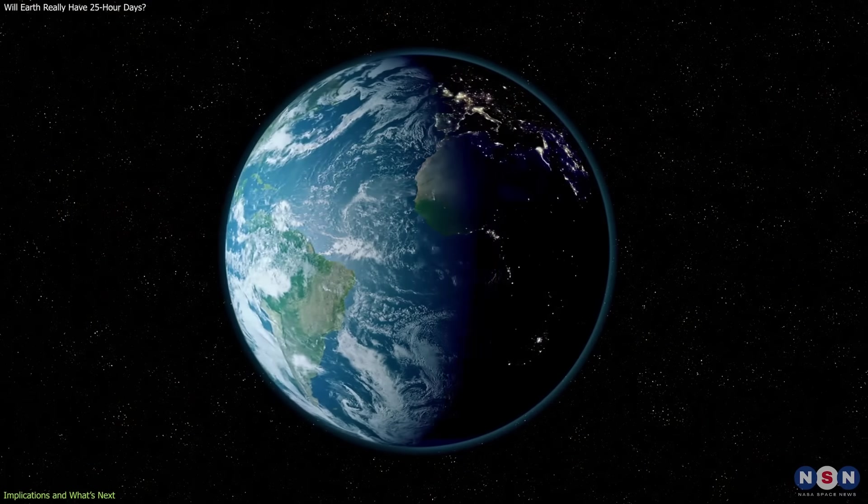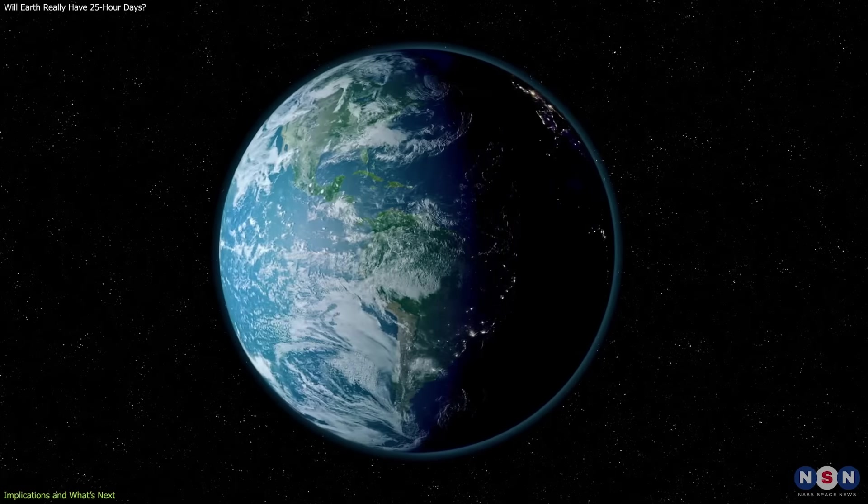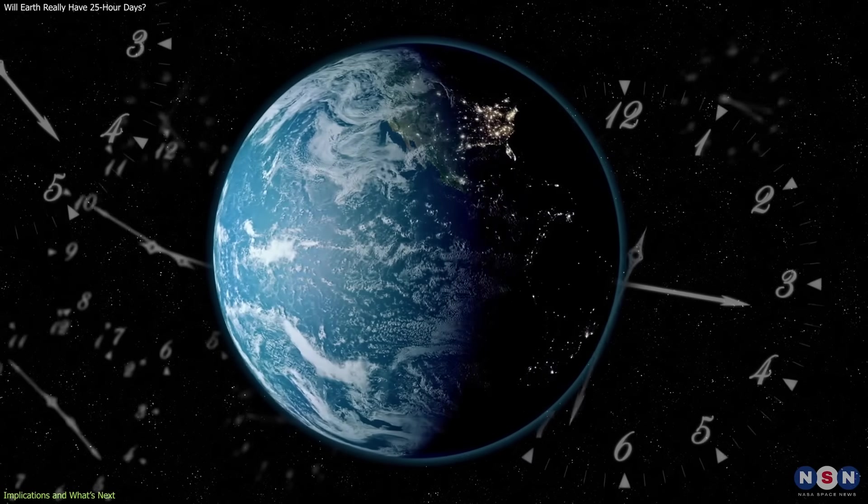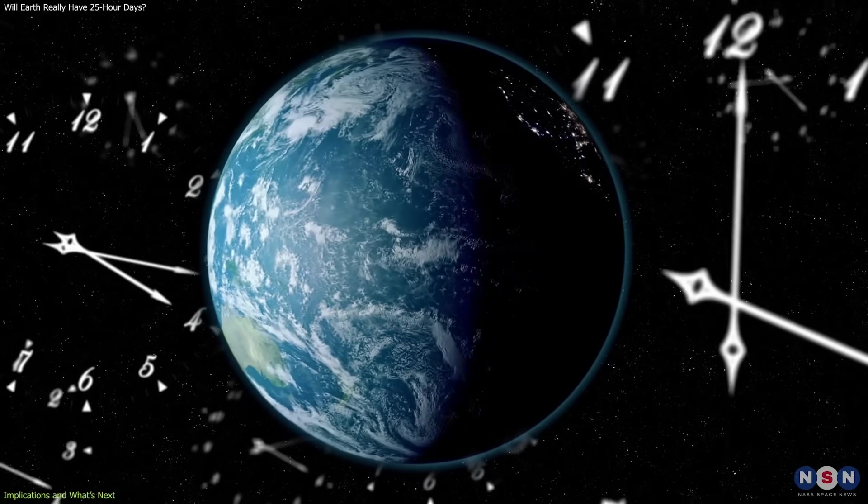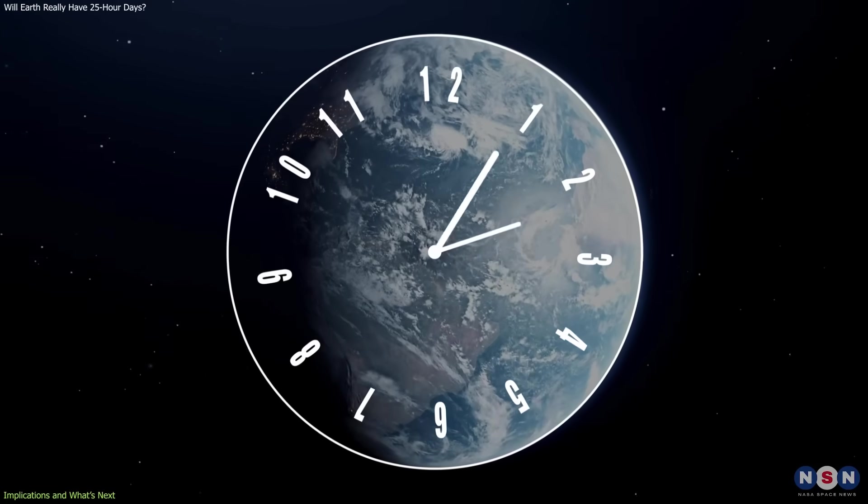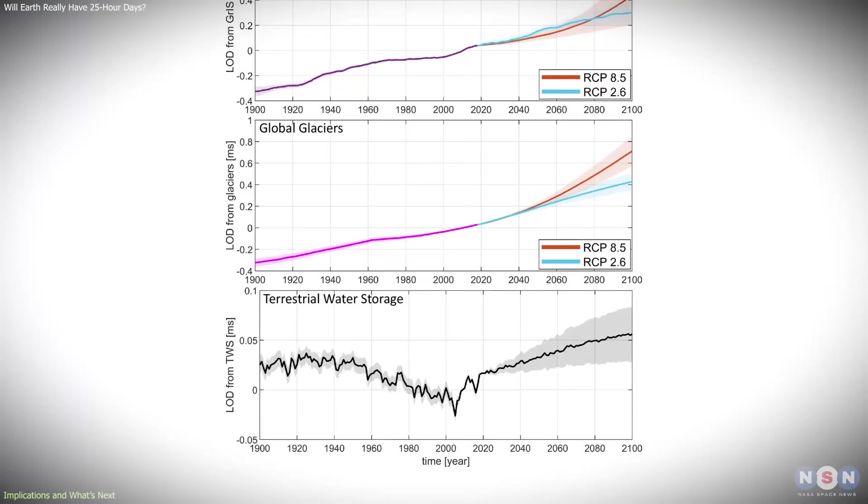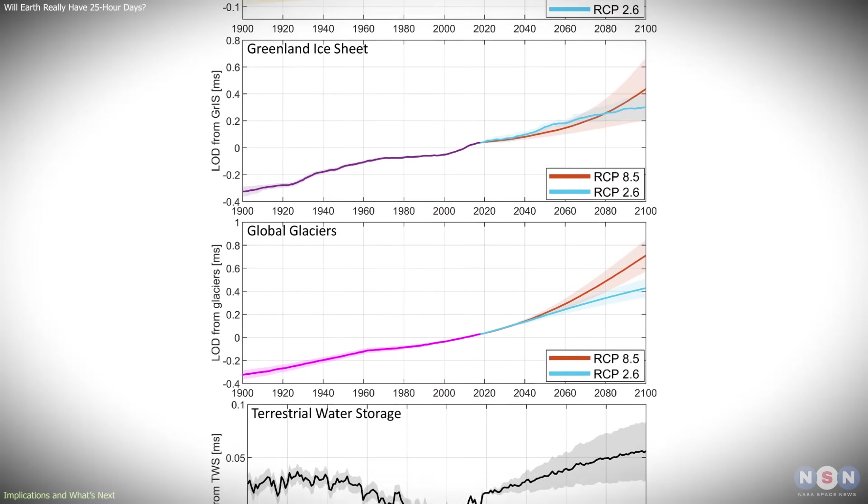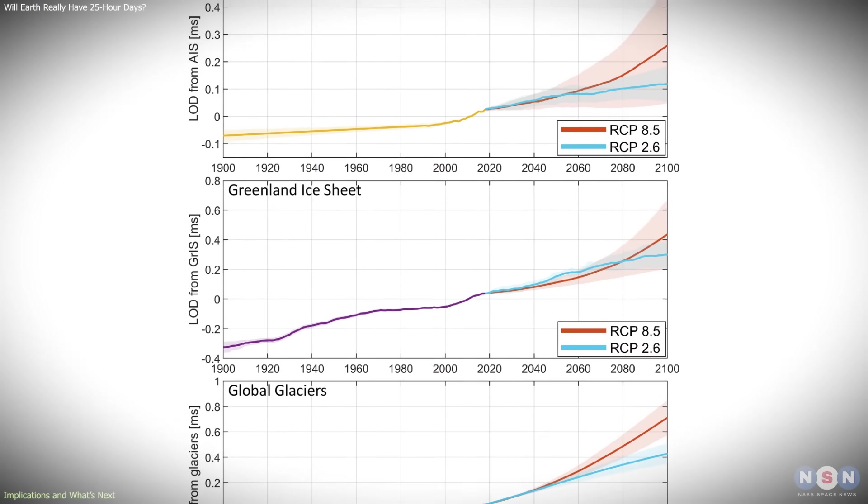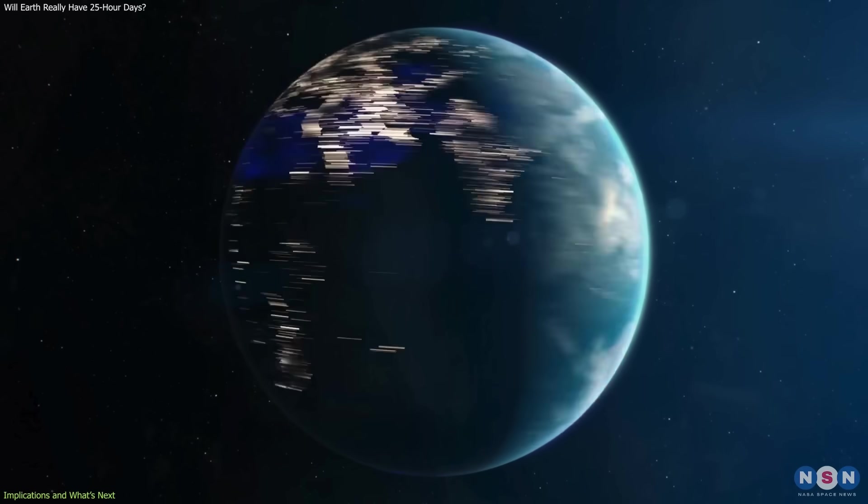The key takeaway is that Earth's rotation is shaped by multiple overlapping processes operating on very different timescales. Some act over days and years, others over millions of years. Modern science allows these influences to be separated, measured, and understood as parts of a single system.